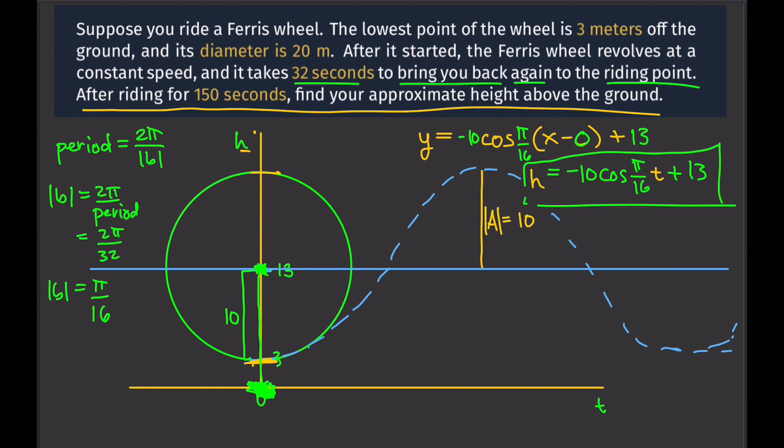After writing 150 seconds, find your approximate height above the ground. All we need to do is plug in 150 seconds for T. Let's do that. So, that's equals negative 10 cosine π over 16 times 150 plus 13. And that will give us 16.83. Approximately 16.83 meters.